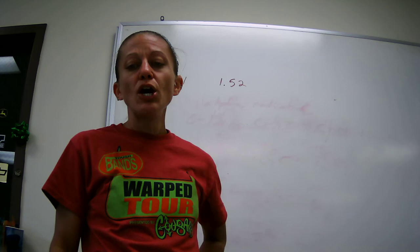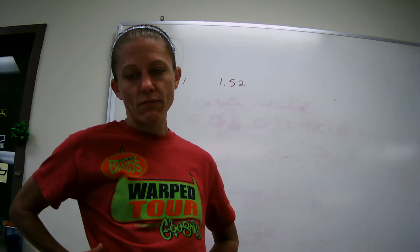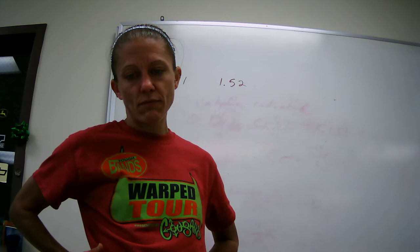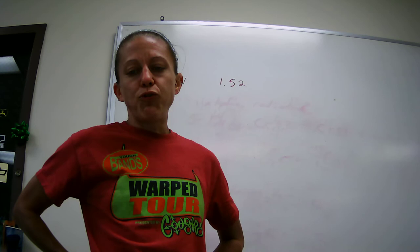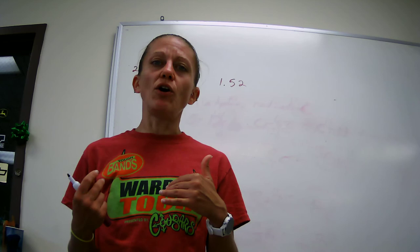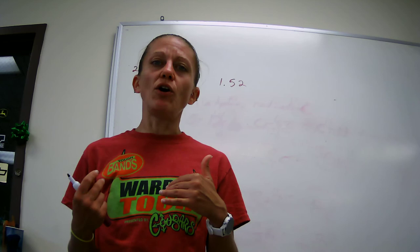Question 21.17. Predict the type of radioactive decay. Give it a shot. Hit pause for me. Cool. So for boron 8, boron shouldn't be 8. Boron, if I go to the periodic table, is like 11. So it's going to be positron emission, because it's below the belt of stability, and it's a lighter element.